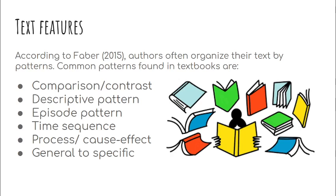Another pattern is general to specific, which is the deductive method, while specific to general is the inductive method. Text features differ from subject to subject because there are many factors, such as jargons, that affect how you understand a specific text. Jargons are terms which are exclusive to a particular field.